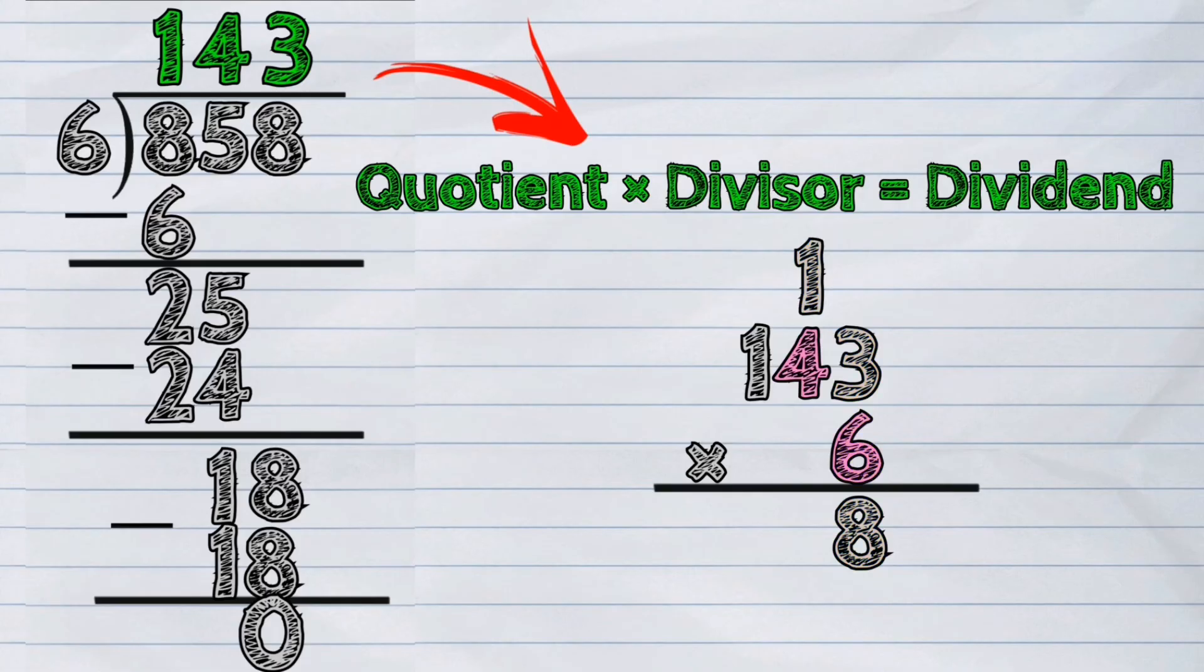So we write eight in the one's column and regroup one in the ten's place. Next, six times four, the answer is twenty-four. We add the number we regrouped, which is one. The answer is twenty-five. We write five in the ten's column and regroup two in the hundred's place. Six times one, the answer is six. Then add two. The answer now is eight.